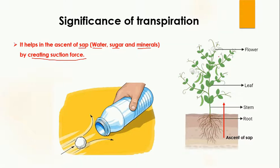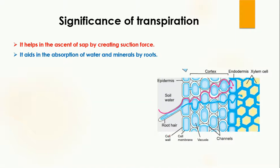This is similar to a plastic bottle example: if you press the bottle in the middle to form a suction force and then suddenly release your hands from a paper ball, the ball will move inside. That suction force creates the movement of the ball. Similarly, transpiration is helpful in creating such a suction force, which helps in the ascent of sap.